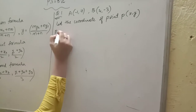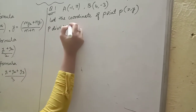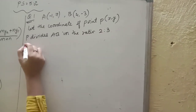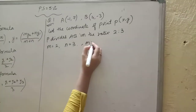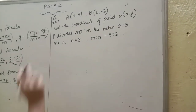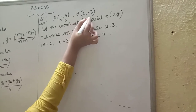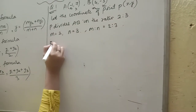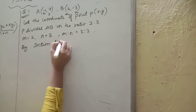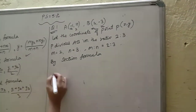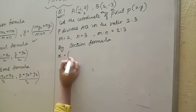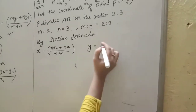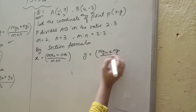P divides A, B in the ratio m:n = 2:3. Here we take A as (x1, y1) and B as (x2, y2). Using the section formula: x = (m·x2 + n·x1) upon (m + n), and for y = (m·y2 + n·y1) upon (m + n).